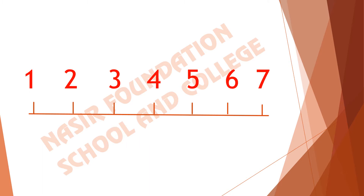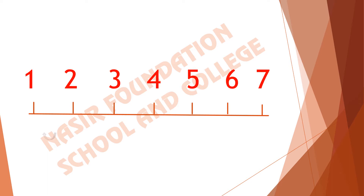And what comes before 3? Do you have any idea? The next number on the number line is 2. So, before 3 it comes 2. What comes before 2? If we move backward on the number line we will see that 1 is placed. So, before 2, 1 is placed. Before 2 it comes 1.